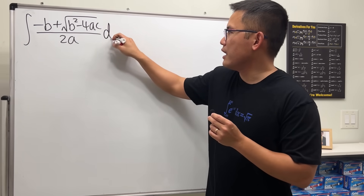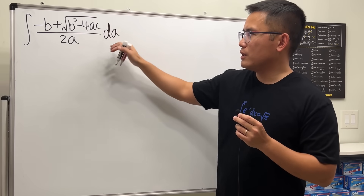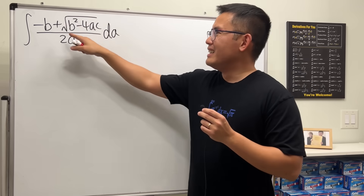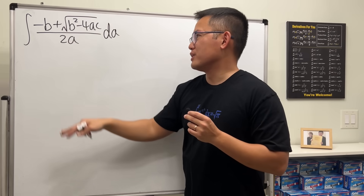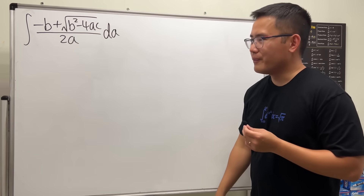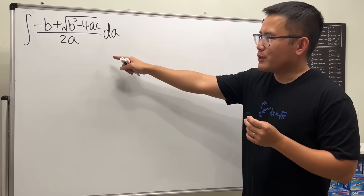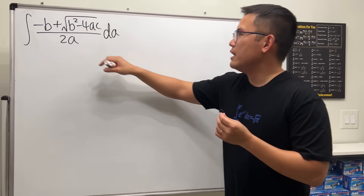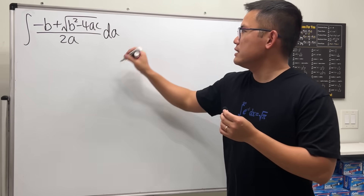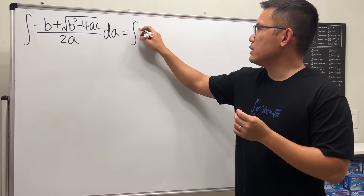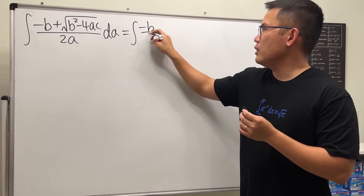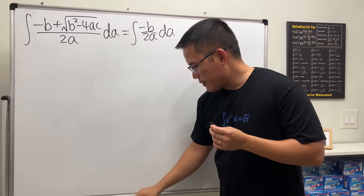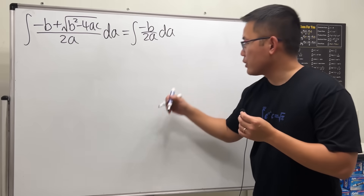I'll put down the integral with da. Feel free to try it with respect to b or c. We'll just focus on the plus version — the minus version is pretty much identical. This is perfect for calculus students. First, I will split the fractions, so we are looking at the integral of negative b over 2a.